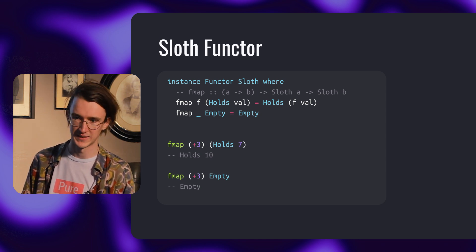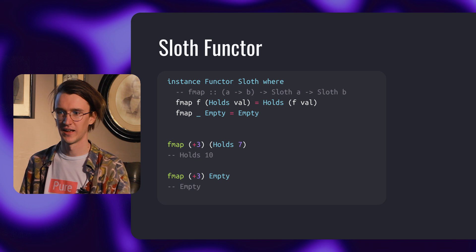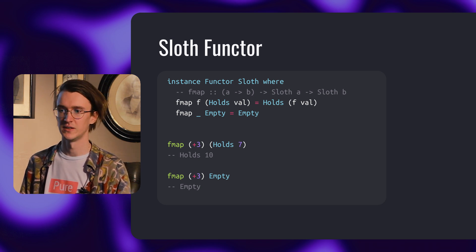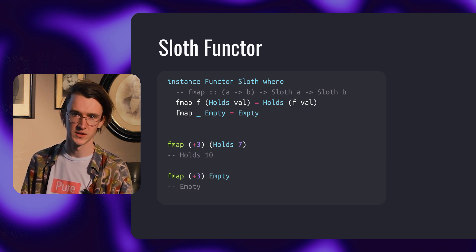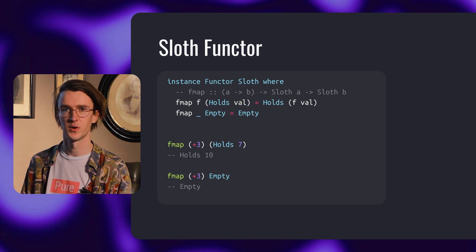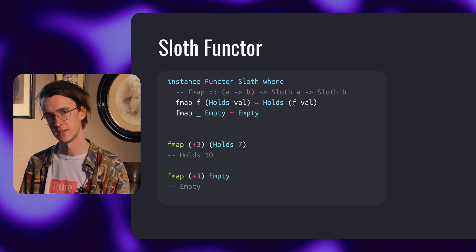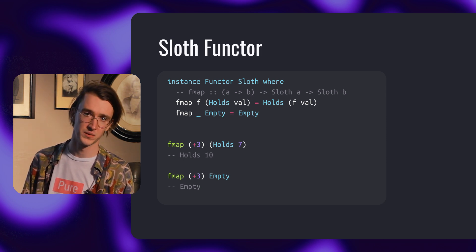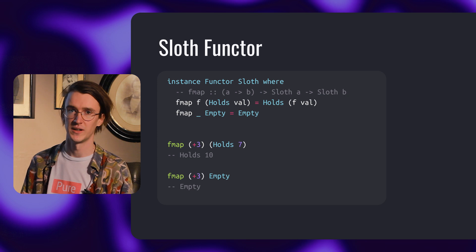Let's look at a few examples. Fmapping plus 3 when it holds the value 7, we get a hold of 10. And if we fmap plus 3 to an empty, we get an empty. We bump into the limit of functors when we have a function with more than one argument.